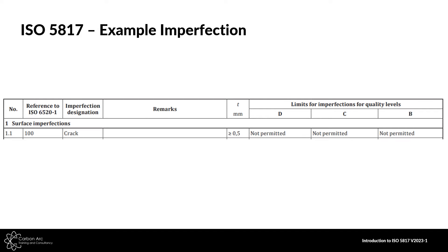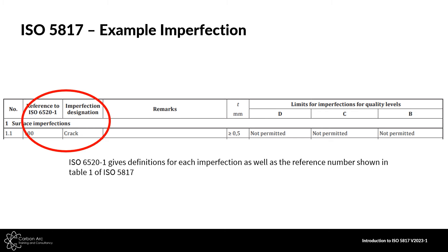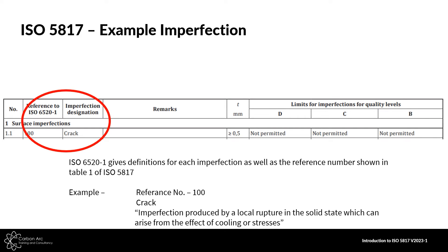The table is relatively well laid out. You've got a top header with a number — every defect has a number within this standard. There's a reference to ISO 6520, which gives detailed descriptions based on that number. So reference number 100, for example, is a crack within 6520, and it gives a more detailed description about what that defect is. If you're unsure how to define what you're seeing, 6520 helps with that. We also have the imperfection designation — for example, crack.